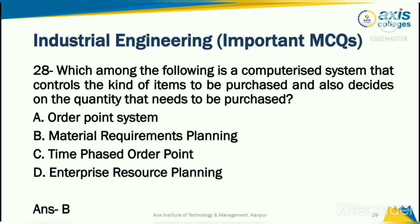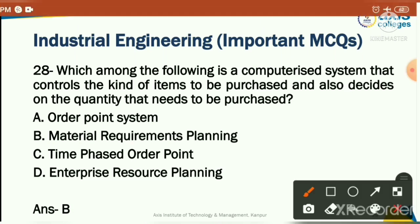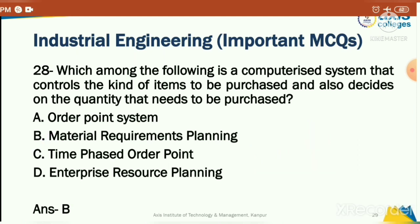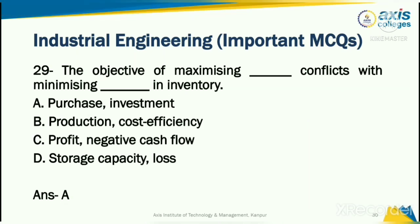Which among the following is a computerized system that controls the kind of items to be purchased and decides on the quantity that needs to be purchased? Options: order point system, material requirement planning, time phase order point, or enterprise resource planning. The correct answer is material requirement planning. Remember: MRP stands for Materials Requirement Planning in industrial engineering.